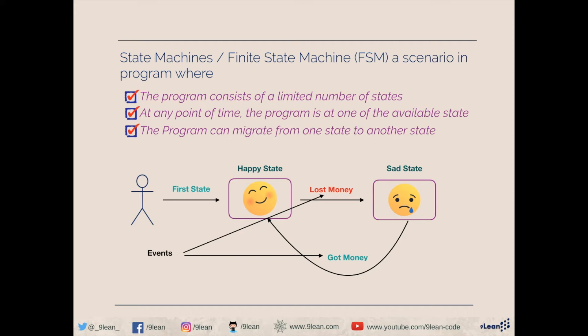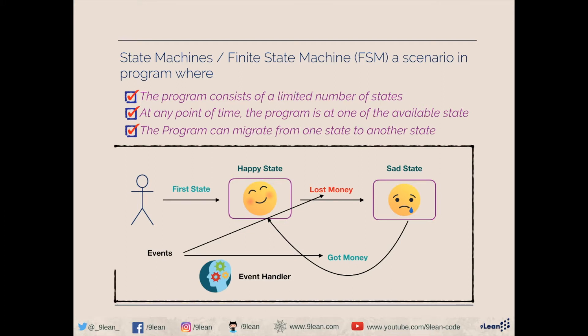So the trigger points are called events, but who actually acts on transforming us from happy state to sad state? It's our mind, which handles the emotion and determines which state we are in. In terms of state machine, this is called an event handler. So we have talked about states, events, and event handlers.